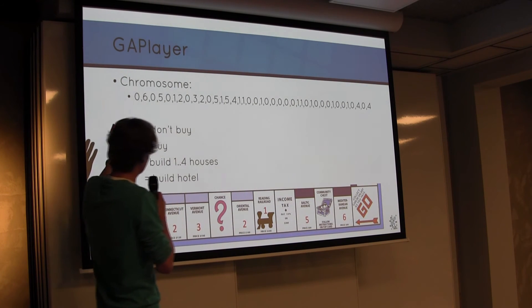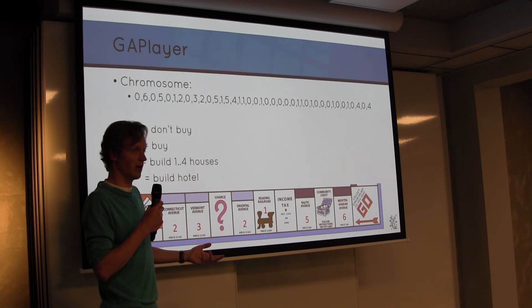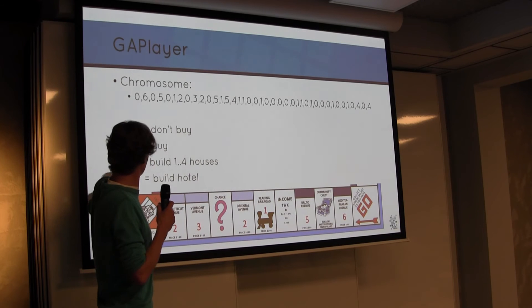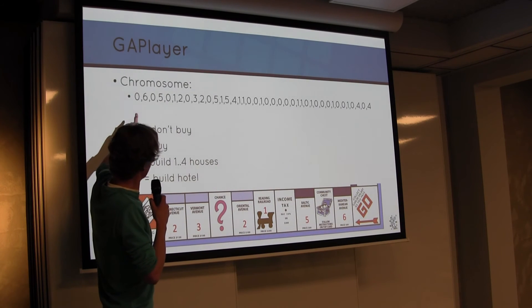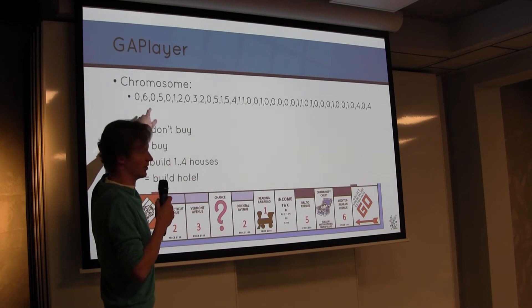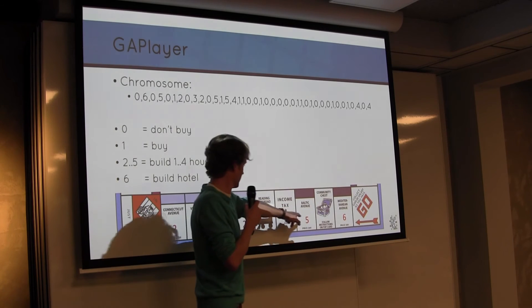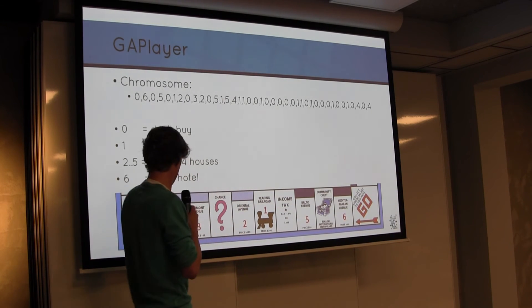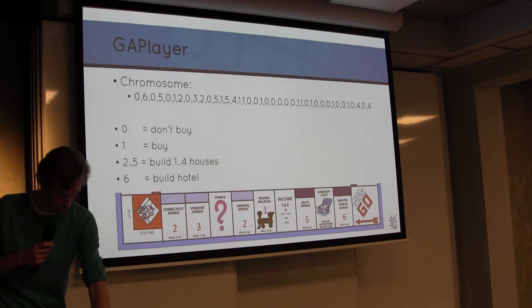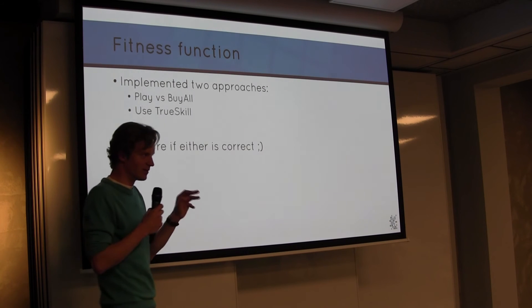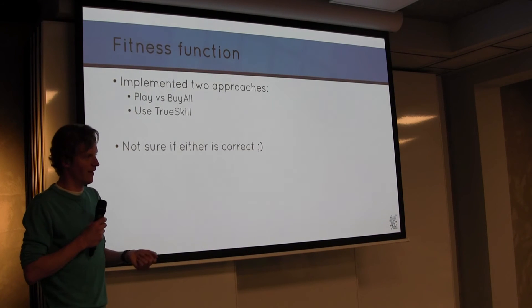So a chromosome is actually, in my case, a list of integers. And it gets translated to how many houses you would like to buy on a certain position in the game. So zero means don't buy this street at all. One means buy. Two to five means build one to four houses. And then six means build a hotel. So for this chromosome, okay, obviously you come by start, so that's zero. And six, you're going to do Mediterranean Avenue. Zero, then a five for Baltic Avenue. You want to buy the railroad and so on. So basically it's like setting a goal, what you would like to buy in this particular game.